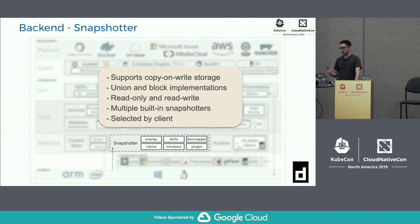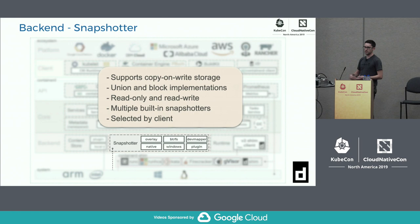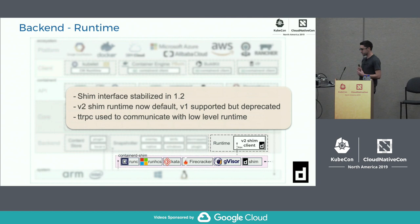All snapshotters are initialized when Container D starts, but the client can specify which one to use — unlike Docker, where you configure one graph driver and everything disappears if you switch. In Container D, snapshots and images are completely separated. You can have images unpacked into multiple snapshotters and let the client manage all of them.